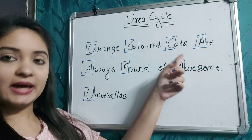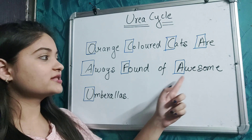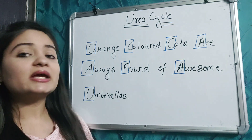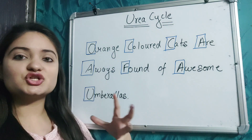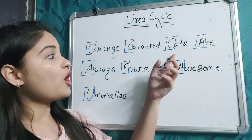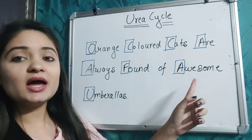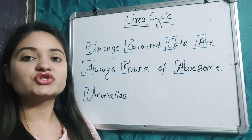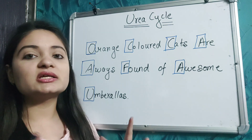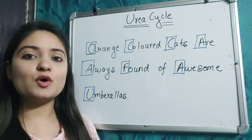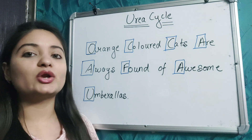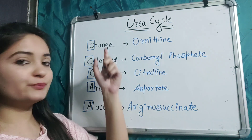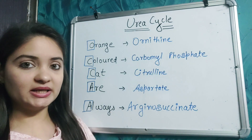Now let's learn the trick for the urea cycle. The mnemonic is: 'Orange colored cats are always fond of awesome umbrellas.' It is a very simple and easy trick. Imagine that the cats are orange colored and always like awesome umbrellas — picture an orange cat holding an umbrella. We will now correlate this trick step by step with the urea cycle intermediates.